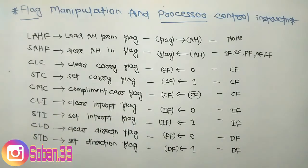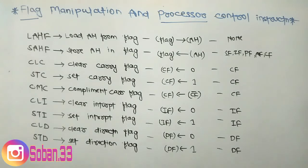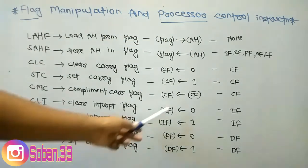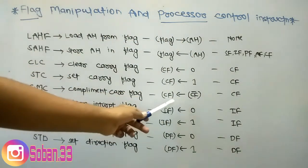CMC means Complement Carry Flag. In assembly language programming there are two values: zero and one. Complement means whatever value the carry flag currently holds — zero or one — it gets inverted. So if CF is 1, then after CMC it becomes 0 (CF bar); if CF is 0, then it becomes 1.